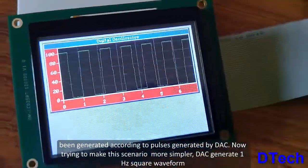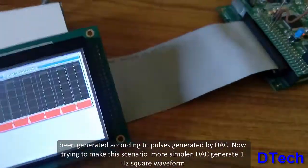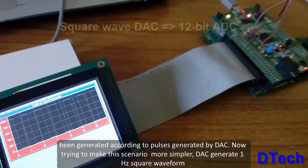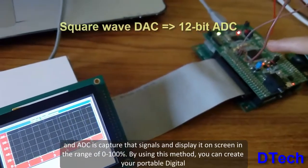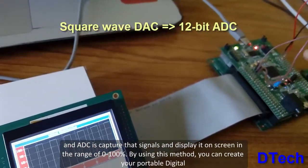Now, trying to make this scenario simpler. First, the DAC is generating a 1kHz waveform and I give it to the ADC channel.